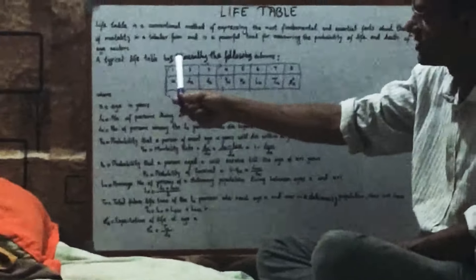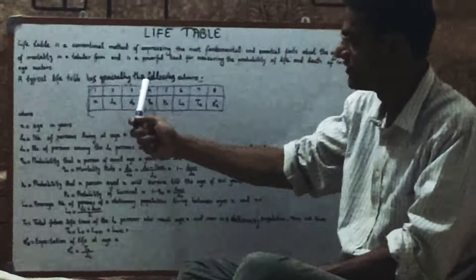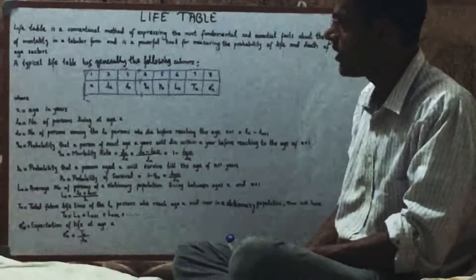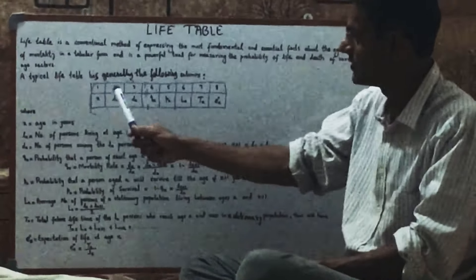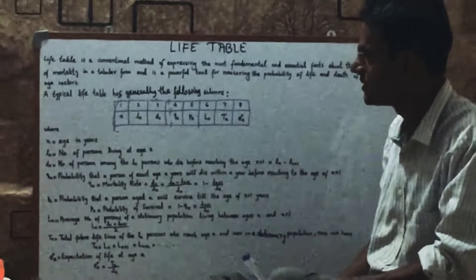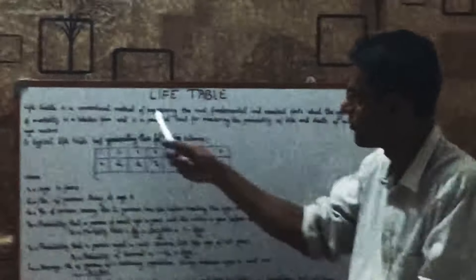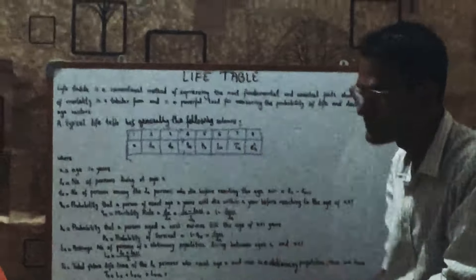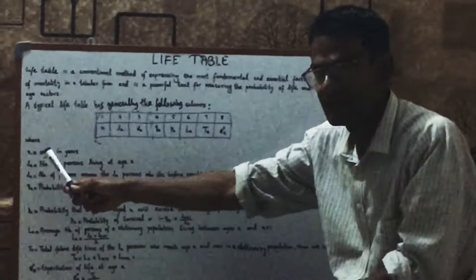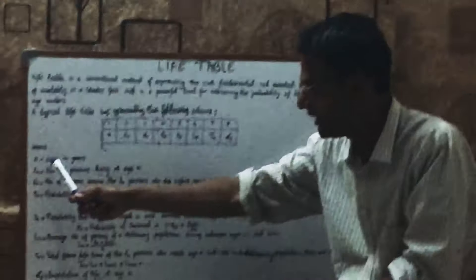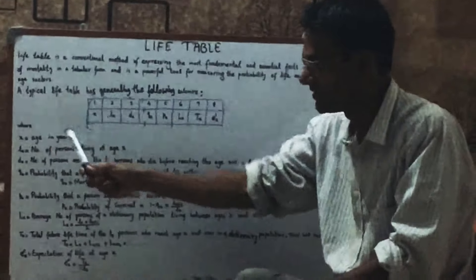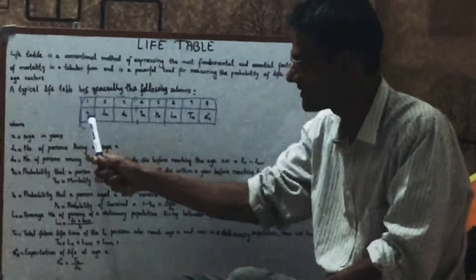A typical life table has the following columns. There are eight columns. In the first column, we set age in years and it is represented by X.